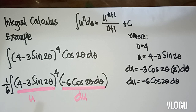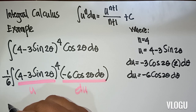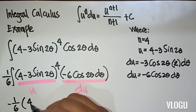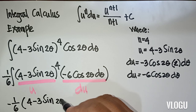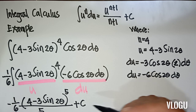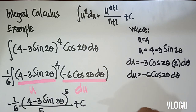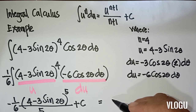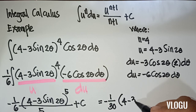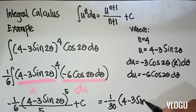We now have a complete form of u to the n du, so we proceed to the formula u to the n plus 1. Therefore, we have negative 1 over 6, times (4 minus 3 sine 2 theta) raised to 4 plus 1, which is 5, over 5, plus C. Our final answer is negative 1 over 30 times (4 minus 3 sine 2 theta) raised to 5, plus C.